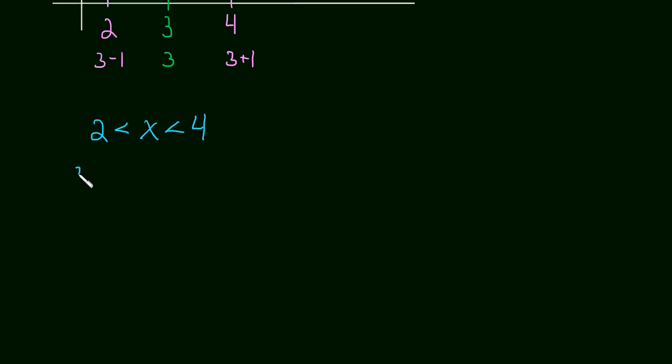And now let's just rewrite this like we had talked about. So it's 3 minus 1 is less than x is less than 3 plus 1. And now, just algebraically, I'm just going to subtract 3 from all parts of this inequality, which I'm allowed to do. And so now we get minus 1 is less than x minus 3 is less than 1.